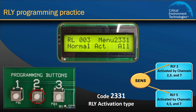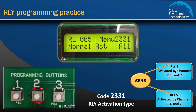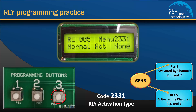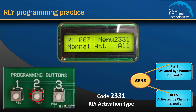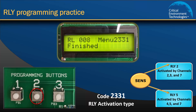We are not concerned with Relay 3, so press 2 again to continue to Relay 4 and again to continue to Relay 5. For Relay 5, we want to assign activation type Sends. Just like before, press programming button 3 once to scroll to None and then again to scroll to Sends. To save your selection, press programming button 2 consecutively to move on to Relays 6, 7, and 8. When you reach the last relay, press 2 again to finish and exit the menu. The screen will display "Finished" and then return to normal operation.